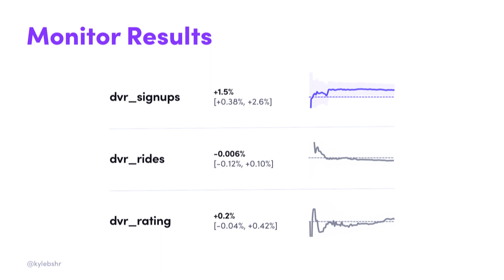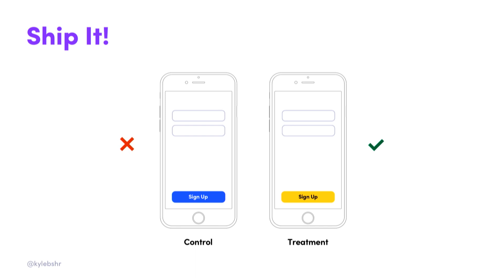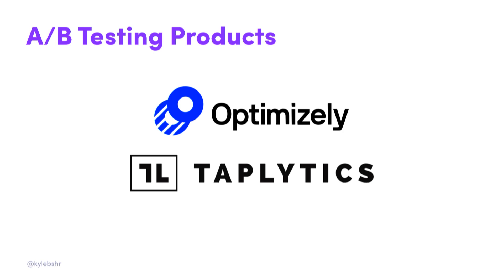Based on that, we'll go ahead and ship the yellow button variation. And I know not every company has enough people to build their own A-B testing frameworks, so there are ones like Optimizely and Taplytics — companies dedicated to building the feature flag implementation that I showed you.